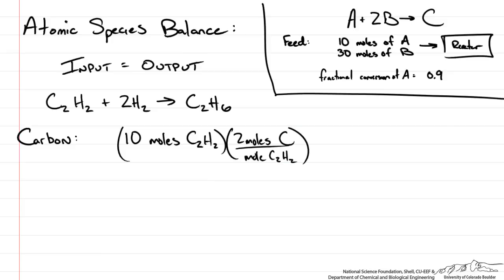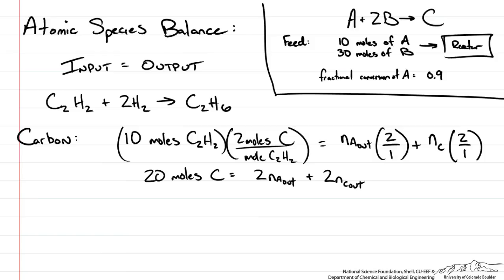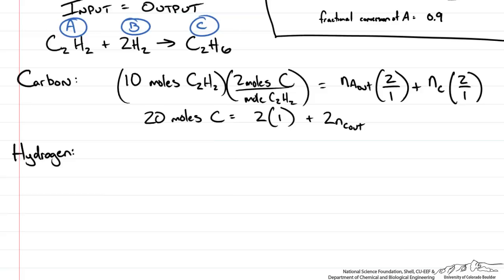We do that same process for every molecule involved. There is no carbon in the second reactant H2, so the carbon in equals the carbon out. What comes out isn't necessarily just C2H6 — we may have some residual C2H2. So we write NA out times the ratio 2 to 1 plus NC out times 2 to 1, since both C2H2 and C2H6 contain 2 carbons. Simplifying this equation we have 2 unknowns: the amount of A and C leaving the reactor. Now we do a hydrogen balance.